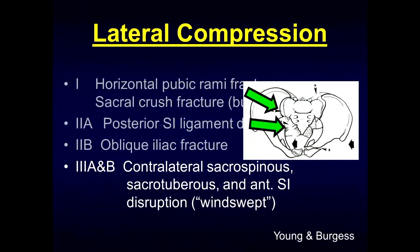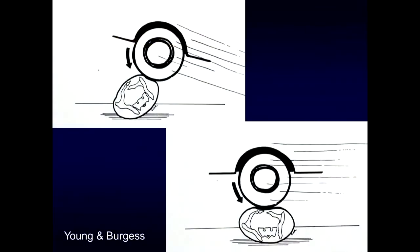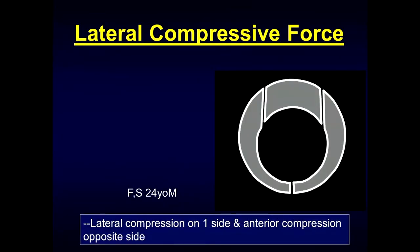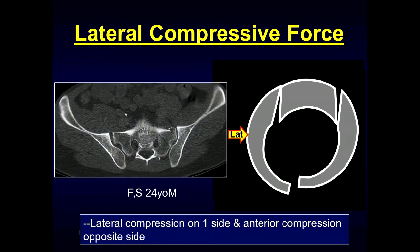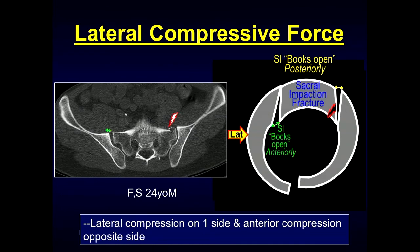With lateral compression 3A and B, you can get contralateral sacrospinous and sacrotuberous anterior SI joint disruption — this is also called the wind-swept pelvis. This type of injury is similar to someone being run over by a car: initially you get the lateral compressive force, and then as the tire moves across the body you have an AP compressive force. So the lateral compression force on one side causes anterior compression on the contralateral side. The SI joints can book open anteriorly as well as posteriorly, and you can get sacral impaction fractures.